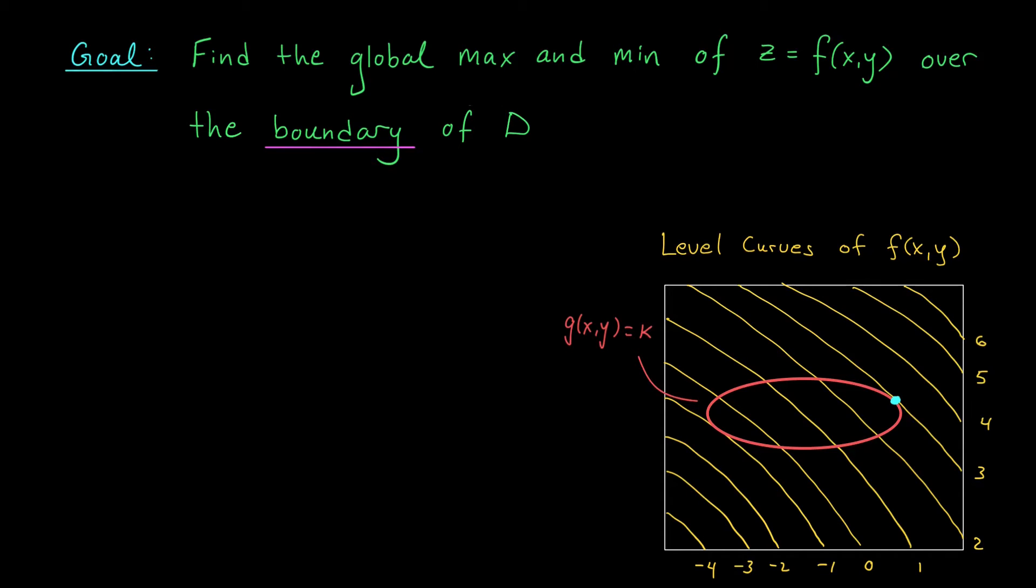We can do the same sort of thing to find our global min. We can continue to lower our level curves until we get to this level curve right here, where our function has a value of minus 1. There you can see we have, again, a point that just lies on our constraint curve.